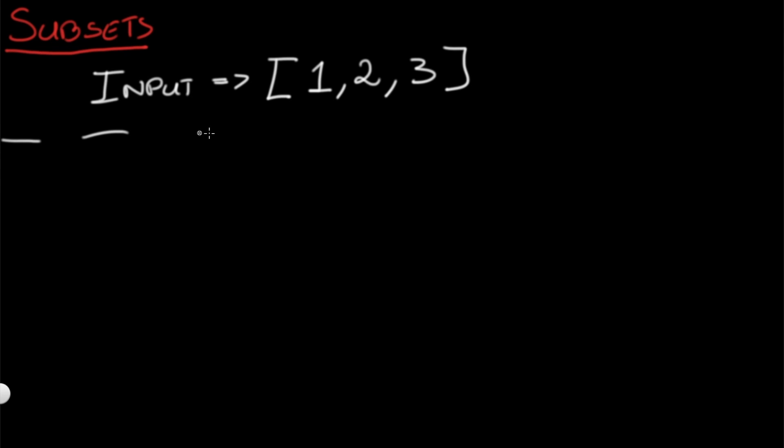What we're going to do is we're going to create a list called results. In results we're going to include all of the subsets. In the beginning, we're going to add an empty list to results because no matter what our input is, we're always going to have an empty list as one of the answers.